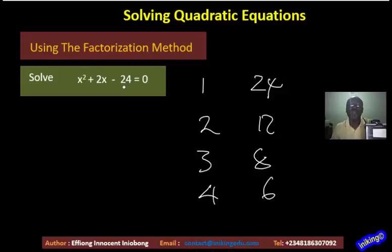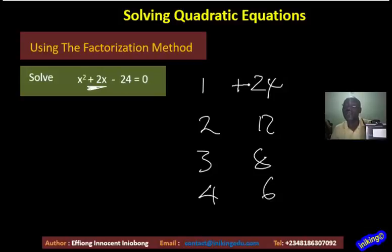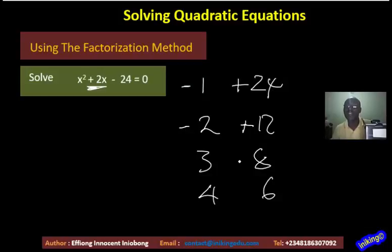Take note: our 24 is negative this time, meaning one factor will be positive and one will be negative. Which is positive and which is negative? I look at 2x — it is positive, telling me the greater number should be positive. For 1 and 24, 24 is greater so it gets the plus and 1 gets the minus. For 2 and 12, 12 is greater so it gets the plus and 2 gets the minus. For 3 and 8, 8 gets the plus and 3 the minus. Likewise for 4 and 6.